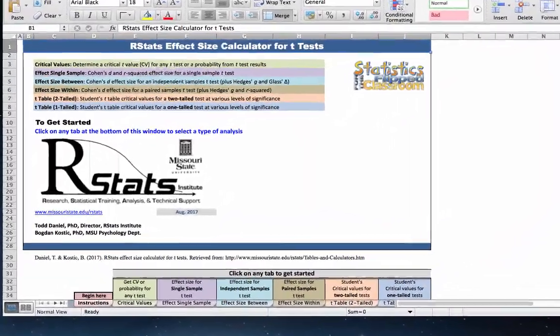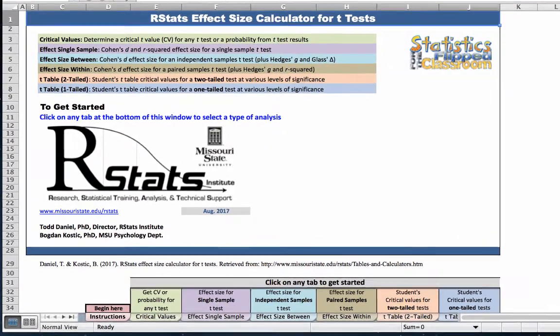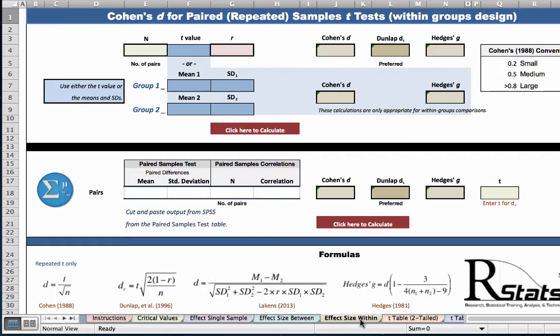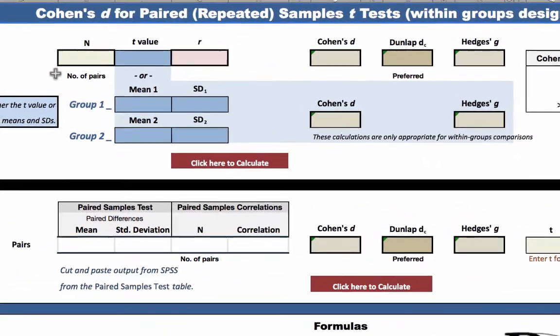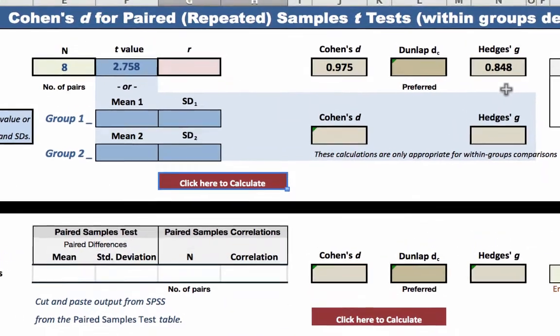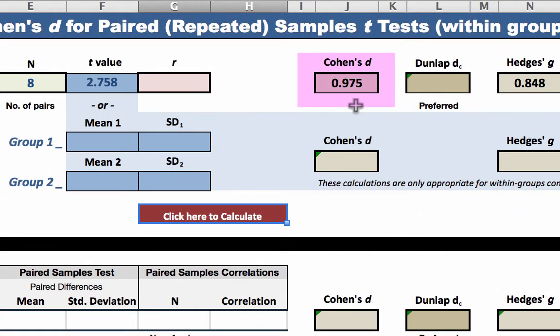To calculate Cohen's D effect size, we will use the rStats effect size calculator for t-tests. We are calculating a Cohen's D for paired samples t-tests, so click on the tan colored tab for effect size within. Here we have three options. The first option would be for if we already had output from the t-test. Enter the sample size for the number of pairs, 8, and the t-value, 2.758. This will give us Cohen's D and Hedges' G, which would be most useful if we were conducting a meta-analysis. But this Cohen's D is actually a little high. Using Cohen's formula overestimates the effect size because the paired variables are correlated.